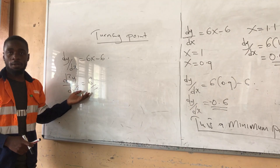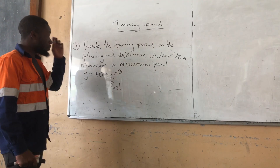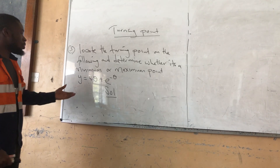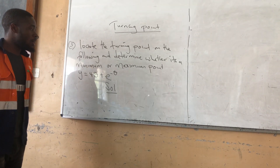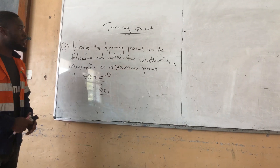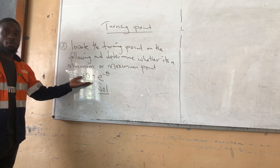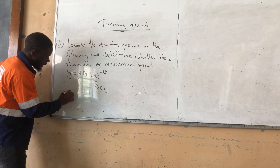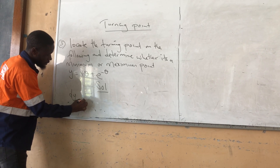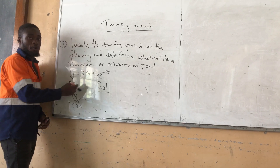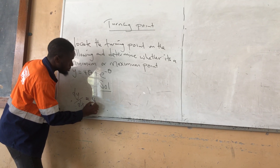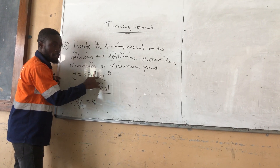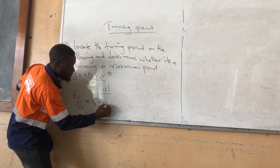You can use either method to find the answer. Now the next question: locate the turning point on the curve y equals 4θ plus e to the power of negative θ, and determine whether it is a minimum or maximum point. The first thing we do is differentiate. The dy/dx equals 4 minus e to the power of negative θ.